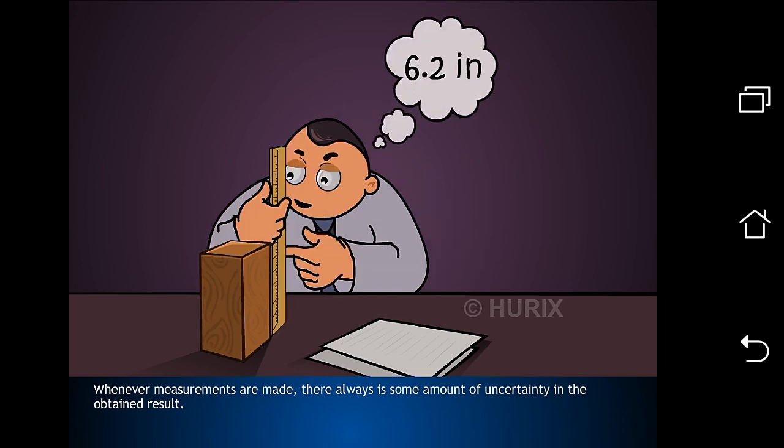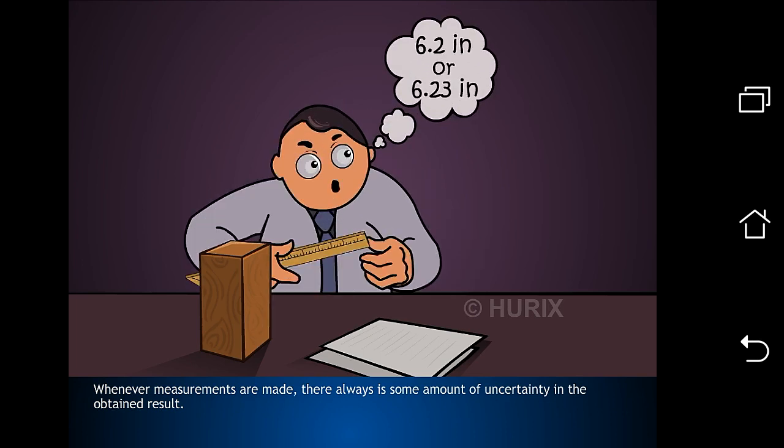Accuracy, precision of instruments and errors in measurement. Whenever measurements are made, there always is some amount of uncertainty in the obtained result. This uncertainty is known as an error.